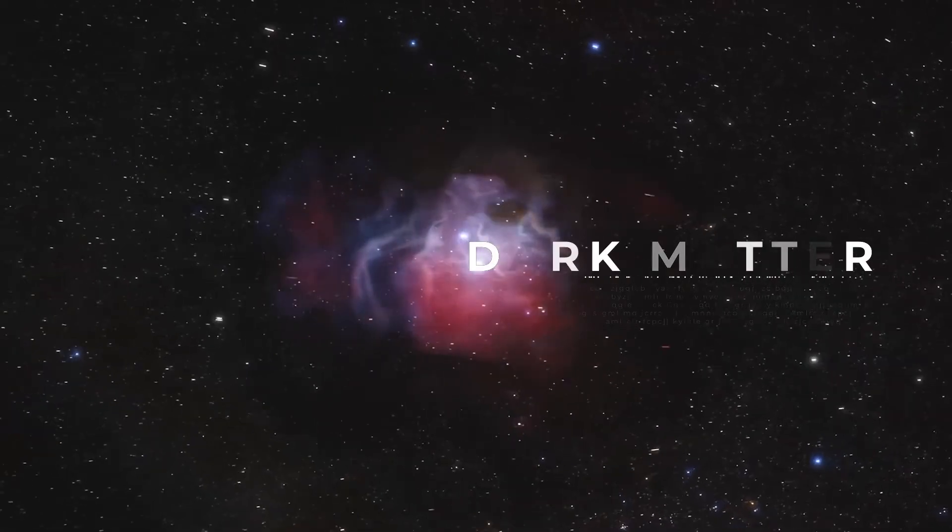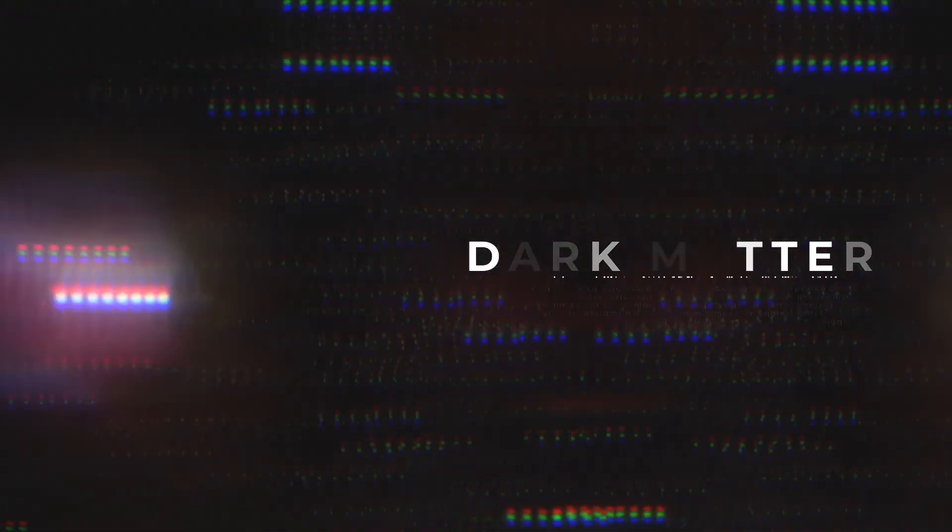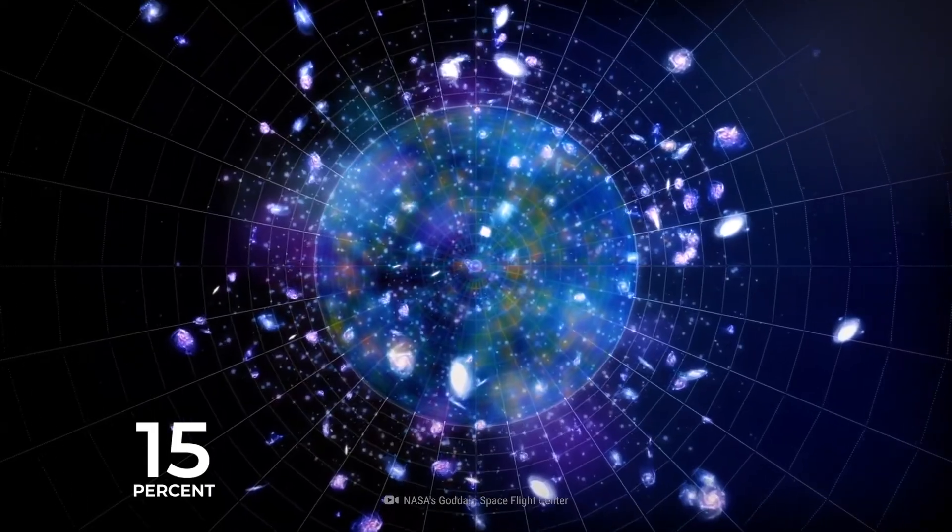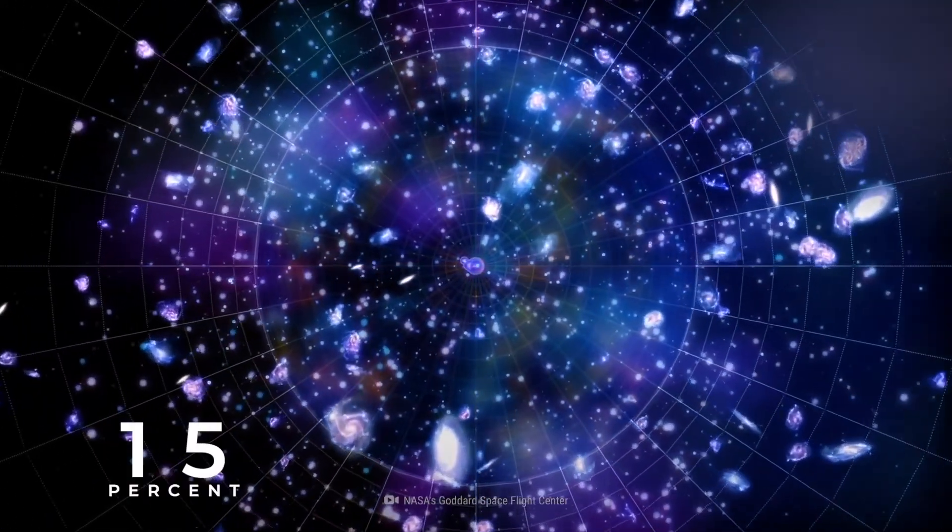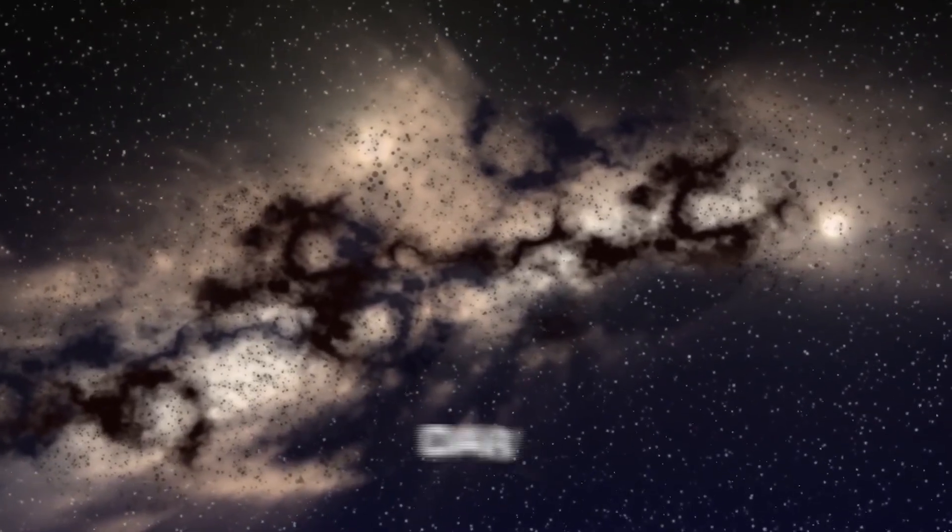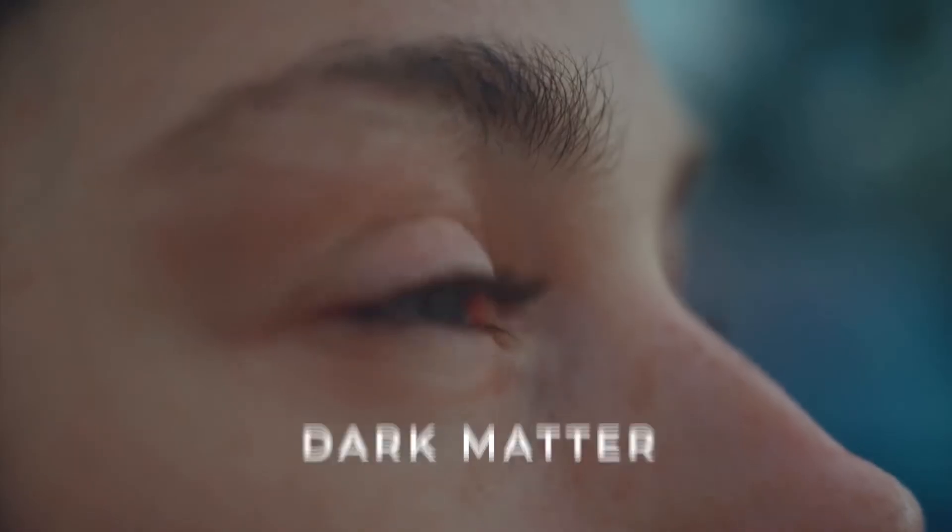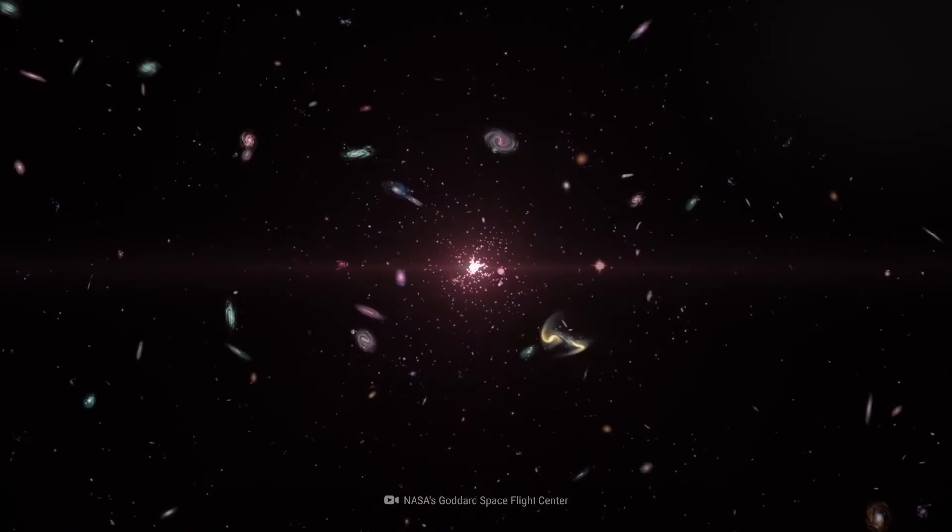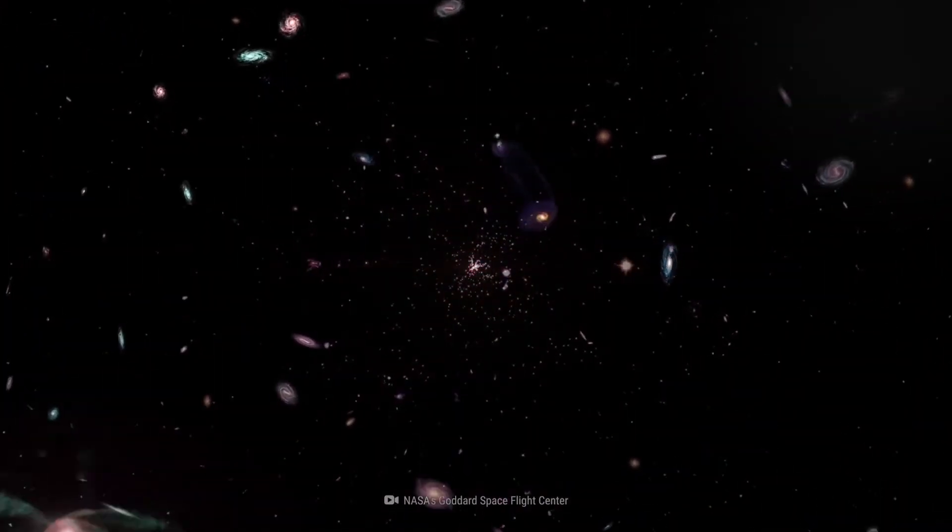Dark Matter. Everything that humans have ever seen makes up only about 15% of the matter that makes up our universe. Scientists have named the other 85% dark matter because it does not interact with light making it invisible to our eyes and does not interact with ordinary matter outside of its gravitational pull.